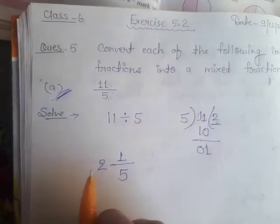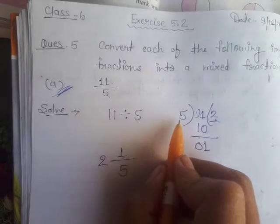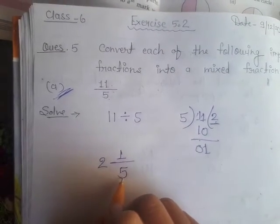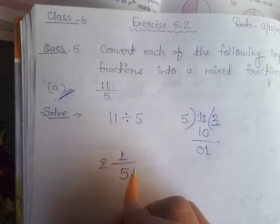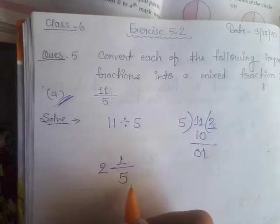Jithne times divide hota hai, that's the whole number. Jisse divide karta hai, that's the denominator, and remainder is 1. So mixed fraction is 2 whole 1 by 5.